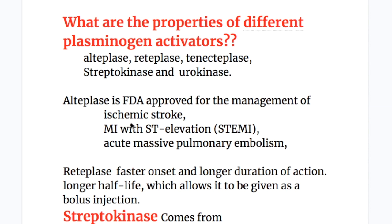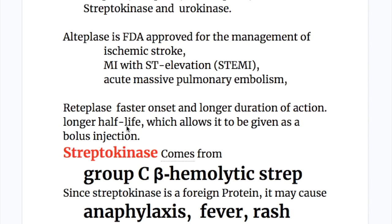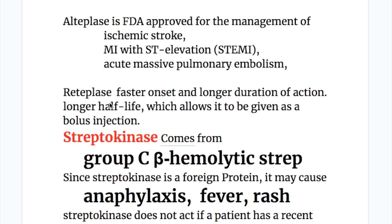What are the properties of different plasminogen activators? The different plasminogen activators are alteplase, reteplase, tenecteplase, streptokinase, and urokinase. Alteplase is approved for acute ischemic stroke, myocardial infarction with ST elevation, or acute massive pulmonary embolism. Reteplase has a faster onset of action and longer duration and half-life, which allows it to be given as a bolus injection.